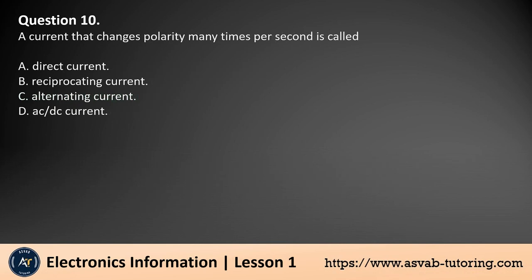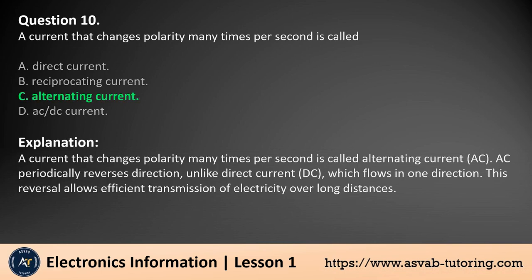Question 10. A current that changes polarity many times per second is called: a. Direct current, b. Reciprocating current, c. Alternating current, d. AC DC current. The answer is c. A current that changes polarity many times per second is called alternating current, AC. AC periodically reverses direction, unlike direct current, DC, which flows in one direction. This reversal allows efficient transmission of electricity over long distances.